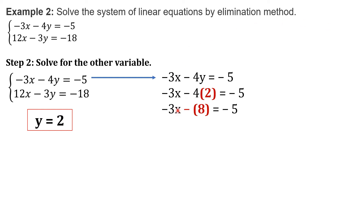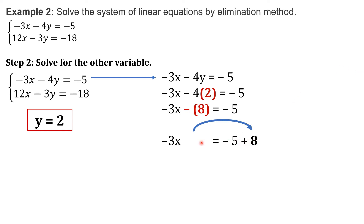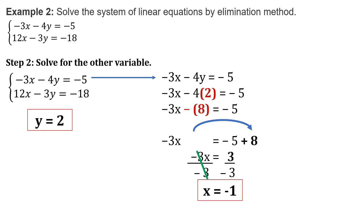Since we are now solving for x, we have to transpose negative 8 to the other side. Negative 8, when transposed, will change sign and become positive 8. Combine it with negative 5. Bring down negative 3x. Negative 5 plus 8 will give positive 3. Copy negative 3x. We are not yet done — since we are solving for x, we have to eliminate this negative 3. To cancel it, divide both sides by negative 3. 3 divided by negative 3 will give us negative 1. Therefore, the value for x is negative 1.